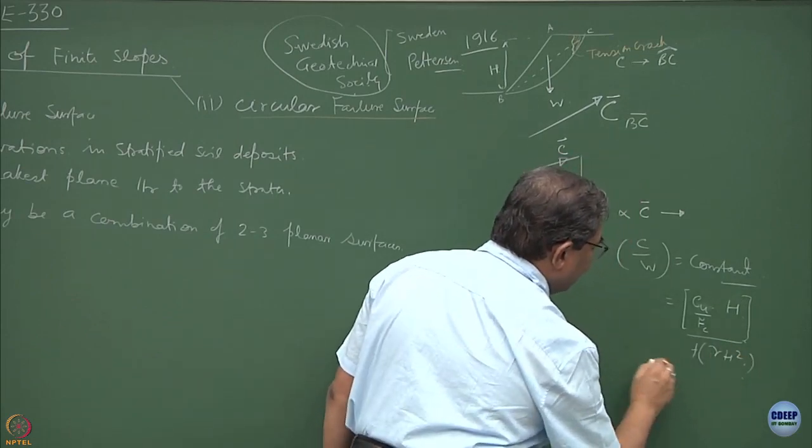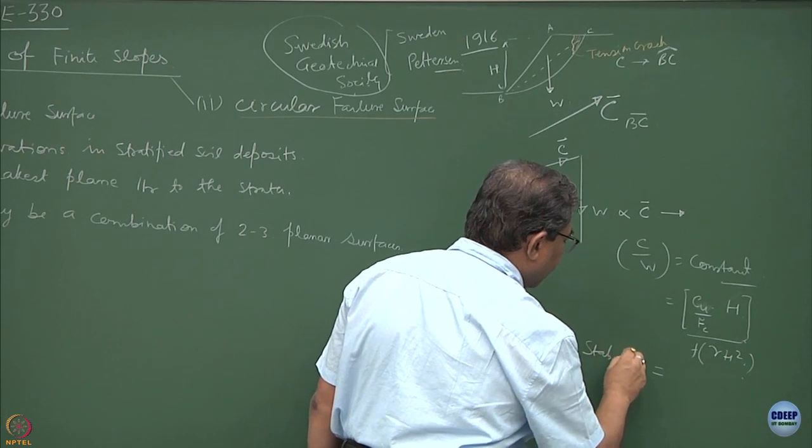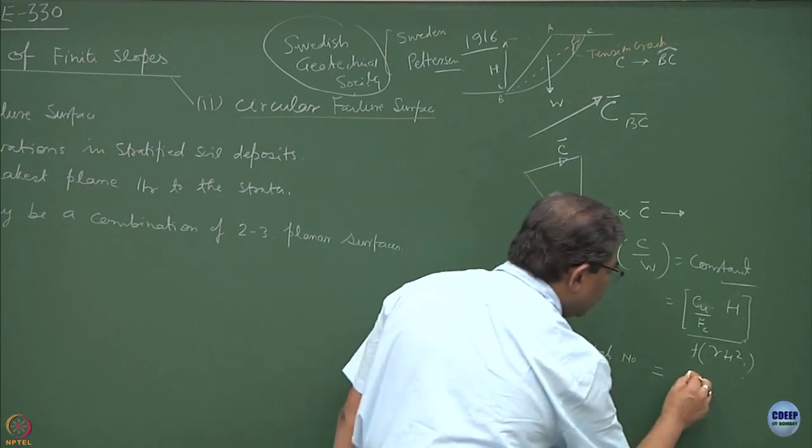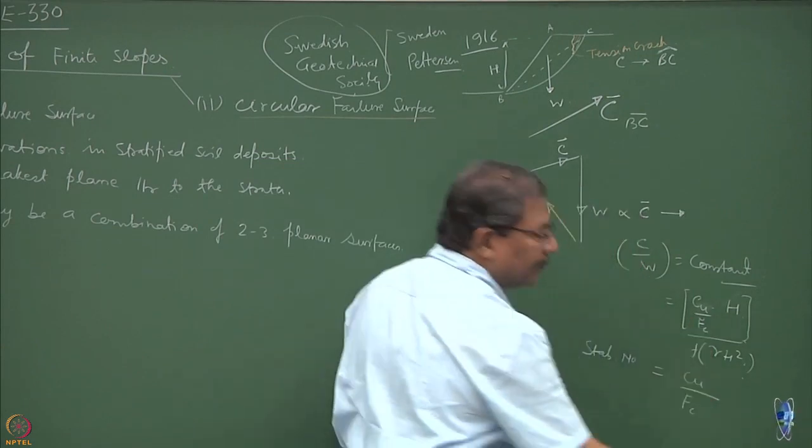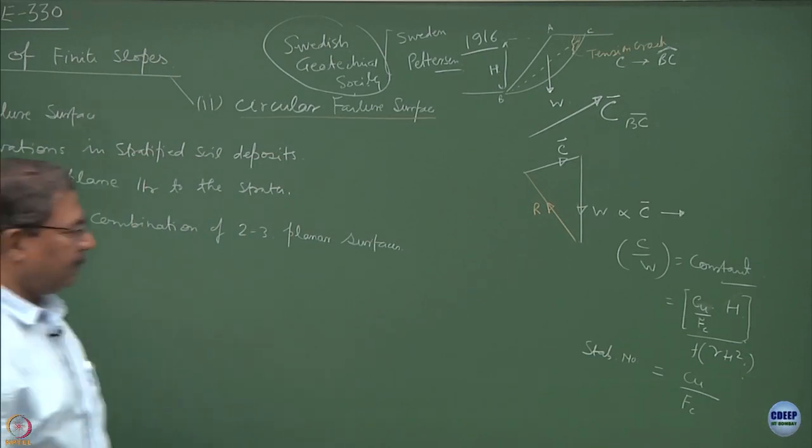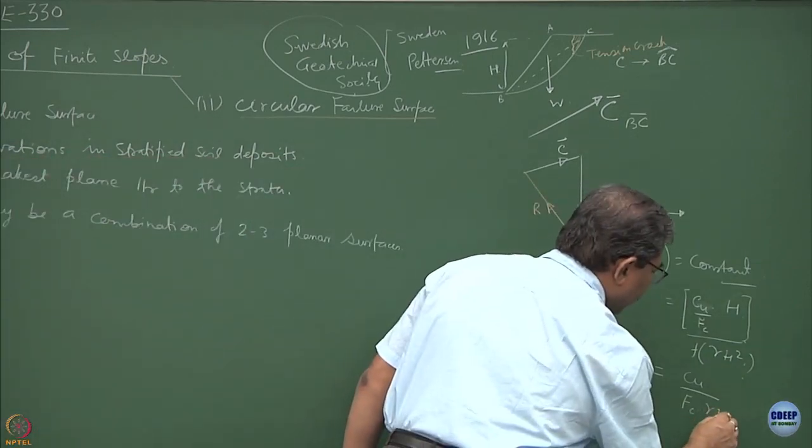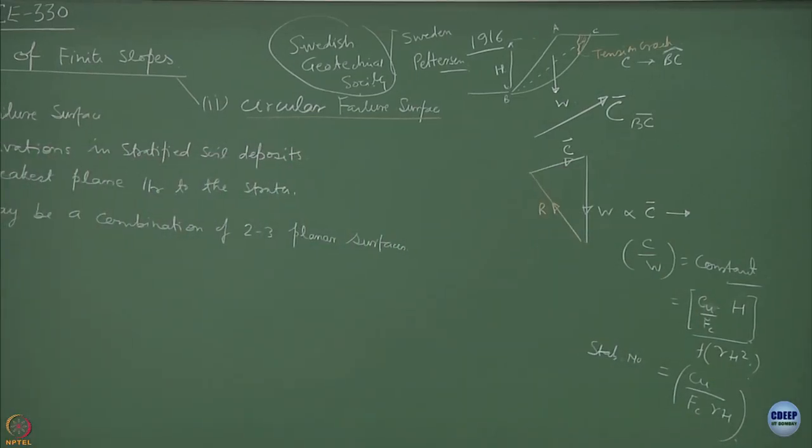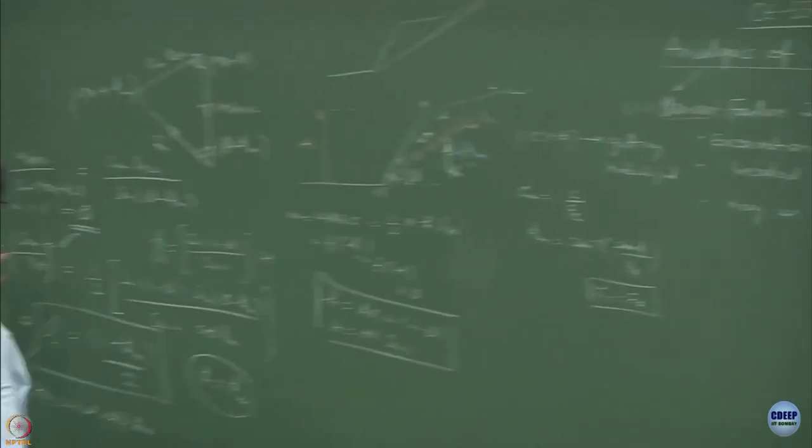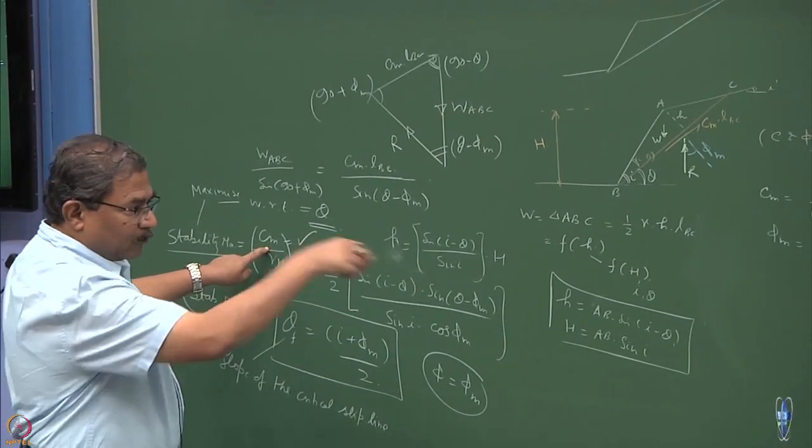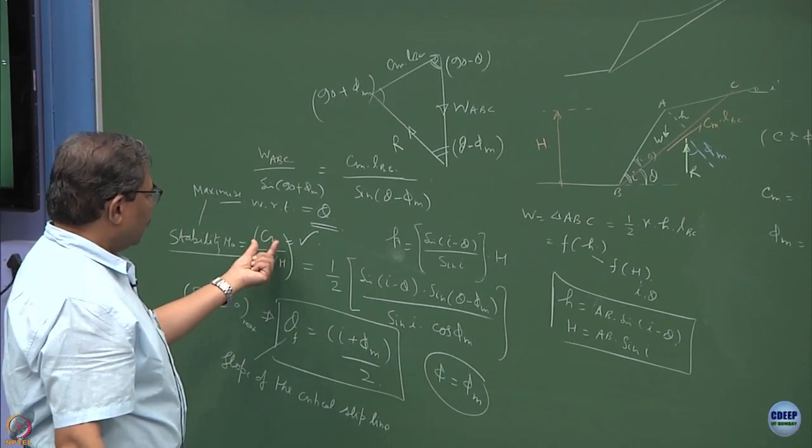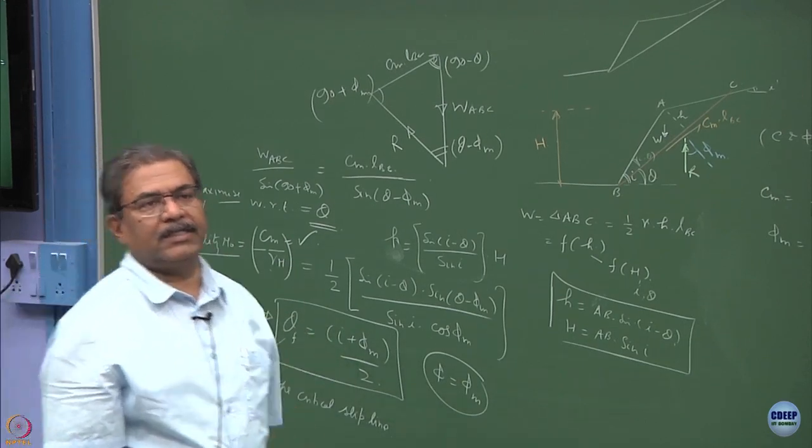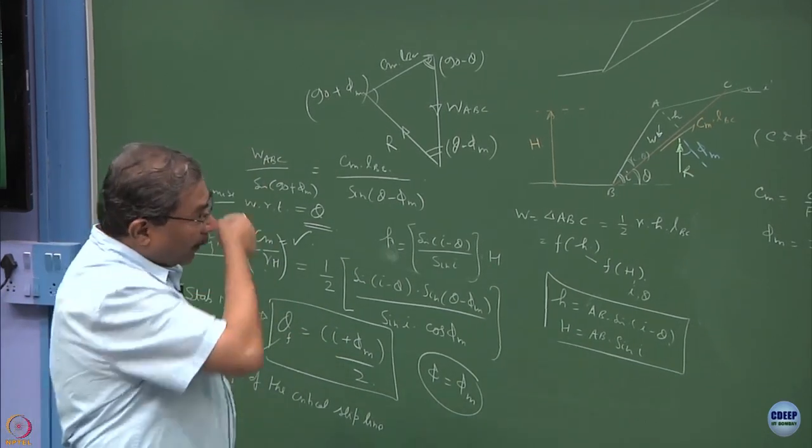Cm is getting mobilized along the slip surface which is a function of H, H is the height of the total slope. And what is W? The W is a function of gamma H square. That is the stability number: Cu over factor of safety against cohesion multiplied by gamma into H.